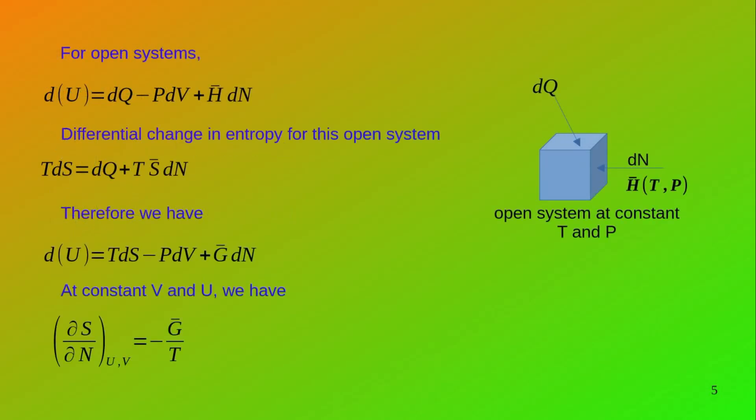Now consider an open system. To this open system, a stream enters and heat is added. Through this stream, a small amount of moles dn enters. This stream has an enthalpy H̅ — that is enthalpy per unit mole — at temperature T and pressure P, which equals the temperature and pressure of the system.